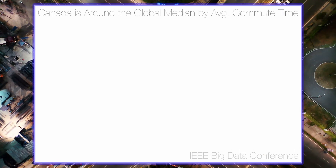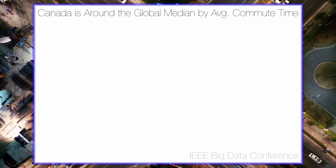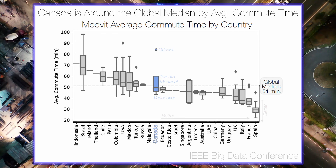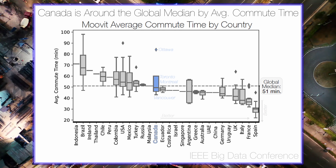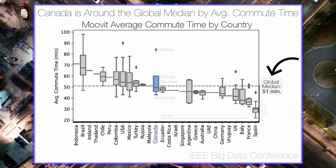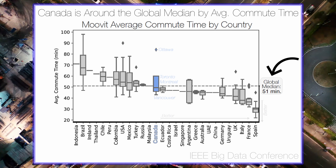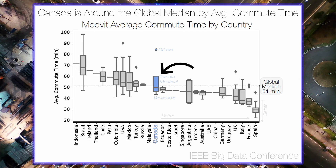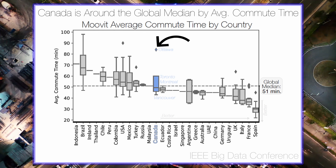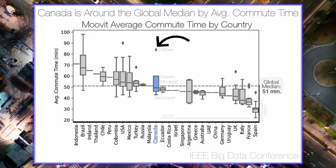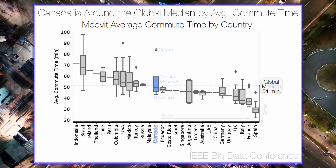Our final key finding, incorporating a more global and temporal component, is that Canada ranks around the global median by average commute time. The MOVIT Public Transit Index data was plotted with average commute times grouped by country and sorted by median value. Canada, with only four major cities represented, is situated approximately in the middle and interestingly outranks the other two North American countries — Mexico and the United States. Several European countries rank well below the global median. Notably, Ottawa is an outlier with a considerably longer average commute time, faring far worse than major cities included worldwide.